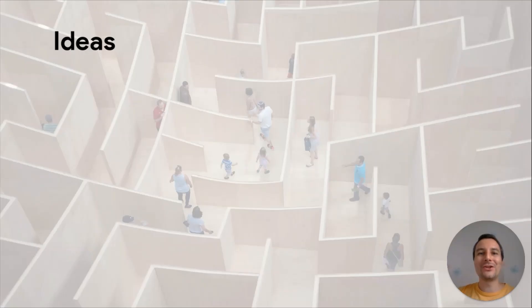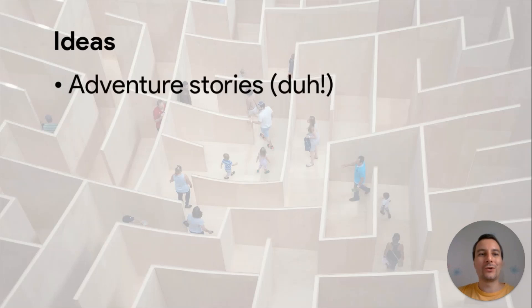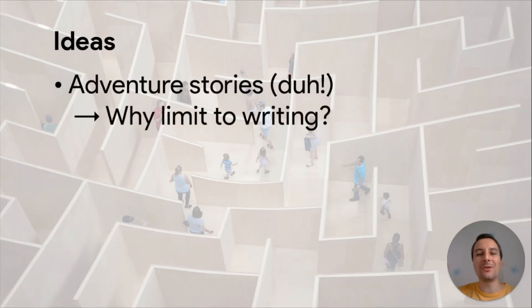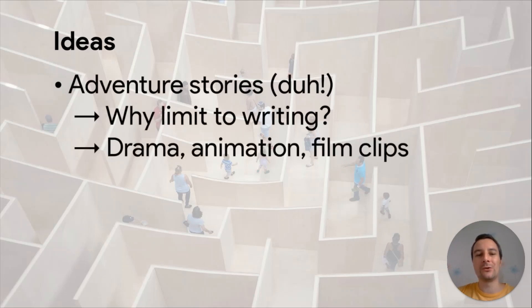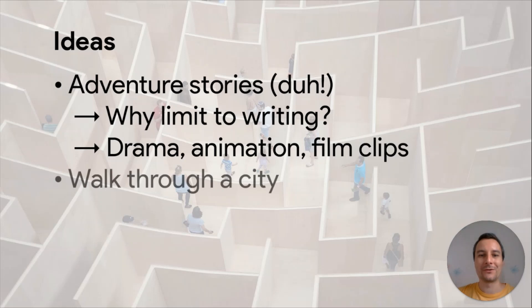Now that you know how to create a hypertext using a Google Form, here are some ideas for activities. Students could create their own adventure stories, but why limit it to writing? They could also include drama performances, animation, or film clips — upload those on YouTube, include them in the form, and have the viewer decide how the drama performance is going to play out.